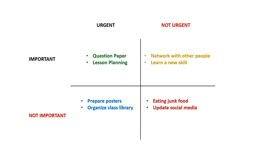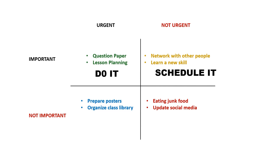Now how does it work? Once we have put things in these four quadrants, what do we do? If something is in the first quadrant — urgent and important — we do it ourselves. If it's in the second quadrant — not urgent but important — we can schedule it, defer it, and do it at a later date. If it's urgent but not important, I can delegate it. And the last one, not urgent and not important — it's my choice whether to do it or not, so I can delete it for the time being.